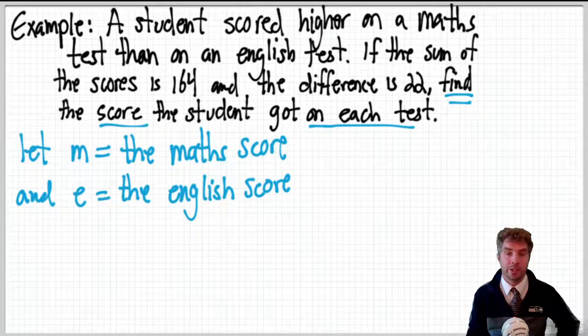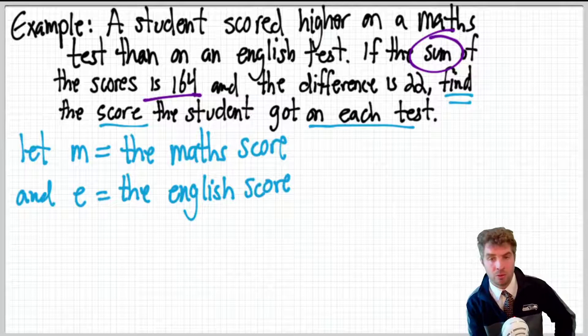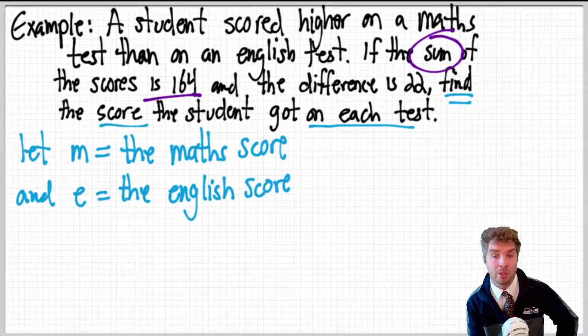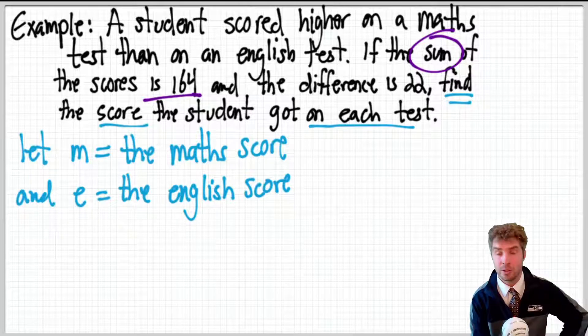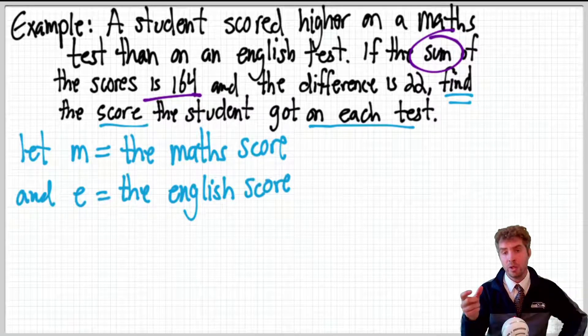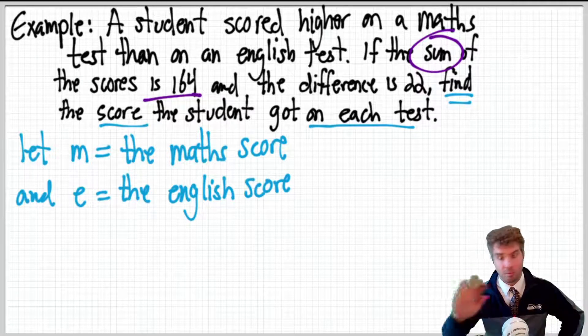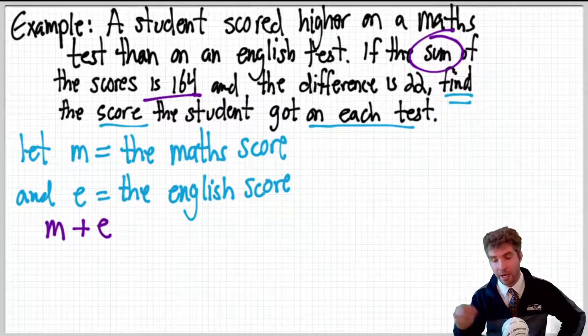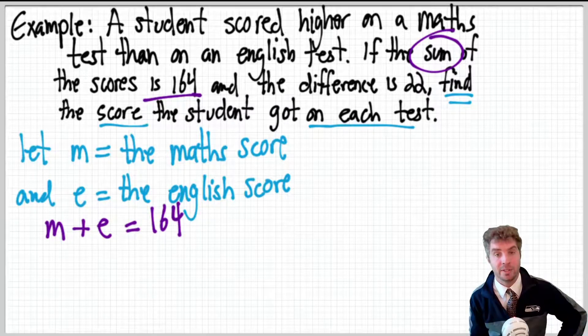Now, we need to write these into equations. So, when you think about what do we know about the scores? It says the sum of scores is 164. Now, here in Australia, and I think in like England as well, the word sum can be used for any sort of arithmetic, you're doing sums, you're practicing sums, you could be doing your times tables, but in a problem like this, the word sum always means addition. So, what that means is if we add the two scores together, then we get 164. It will never mean times or anything like that in a situation like this. So, we're adding the two scores. So, M plus E, and we know that when we add them together, we get 164.